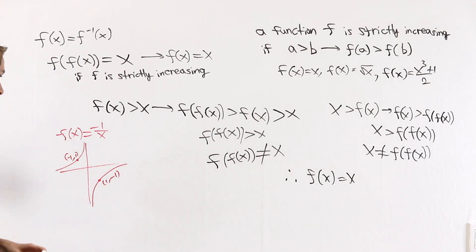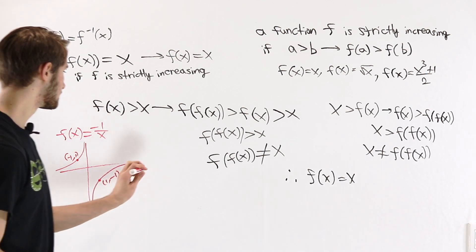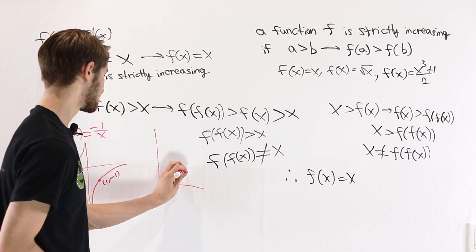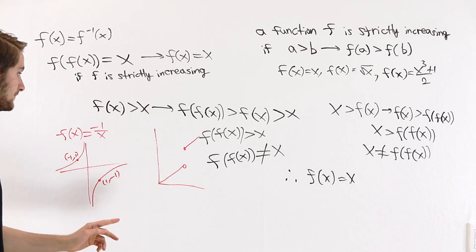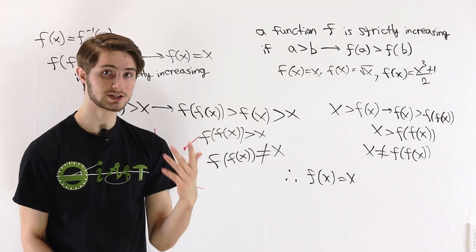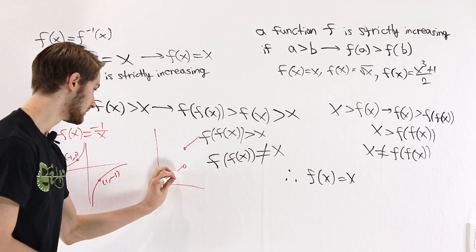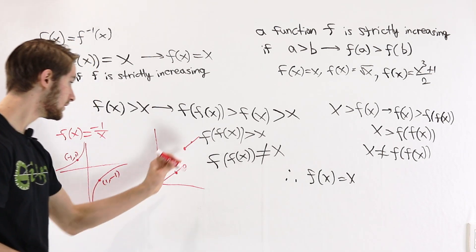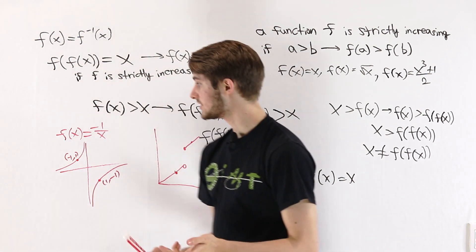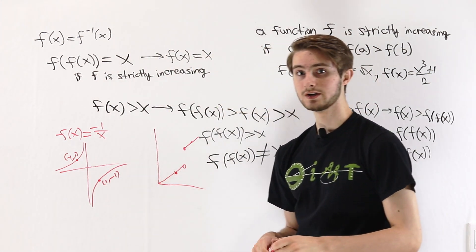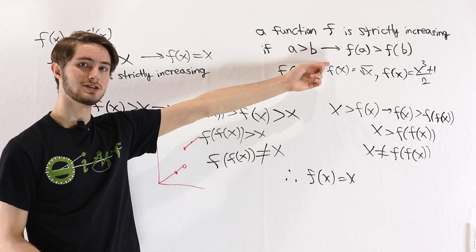It is possible for a function to be strictly increasing without being continuous. For example, if we take a look at a function that has a jump discontinuity at a specific input value, the condition for strictly increasing can still be satisfied, because the jump discontinuity goes up. So if we pick a point on the left and then a point on the right, it will still satisfy the condition that a bigger input leads to a bigger output. The reason it doesn't work for -1/x is that the discontinuity goes from very large values on the left to very small values on the right, so the condition for strictly increasing is not satisfied.